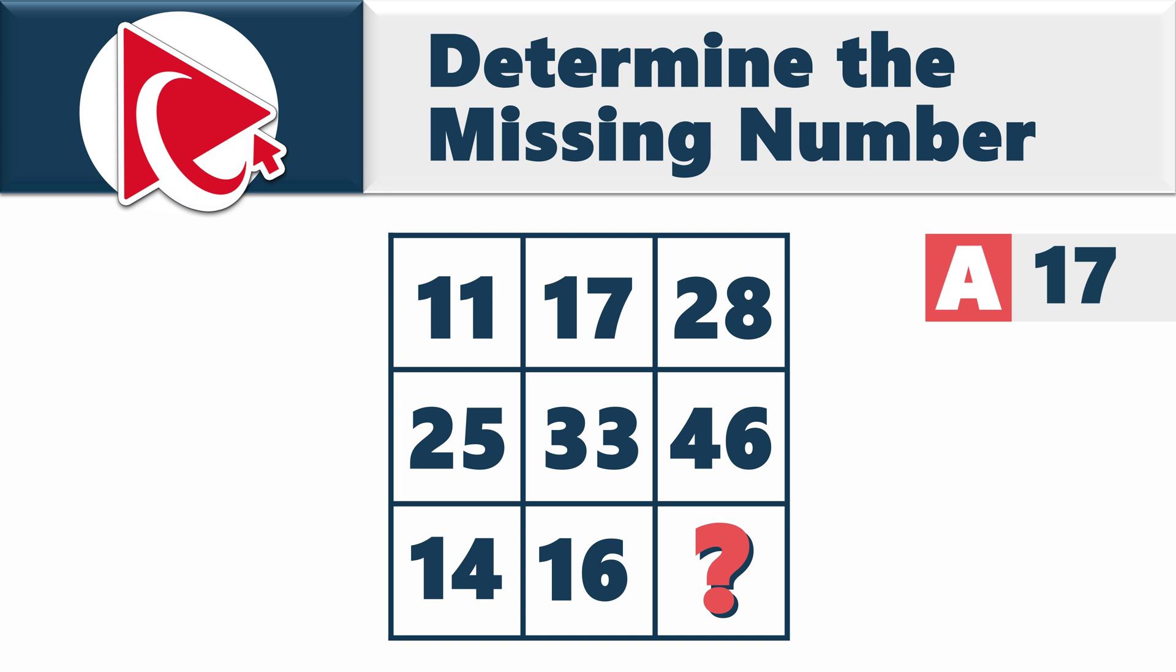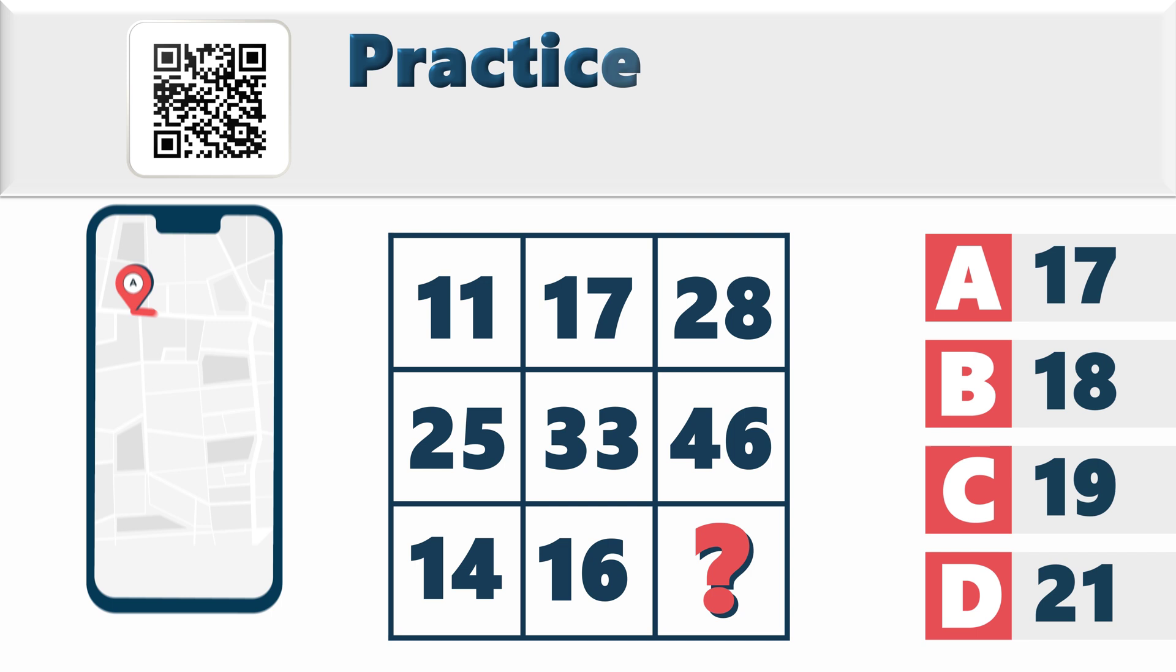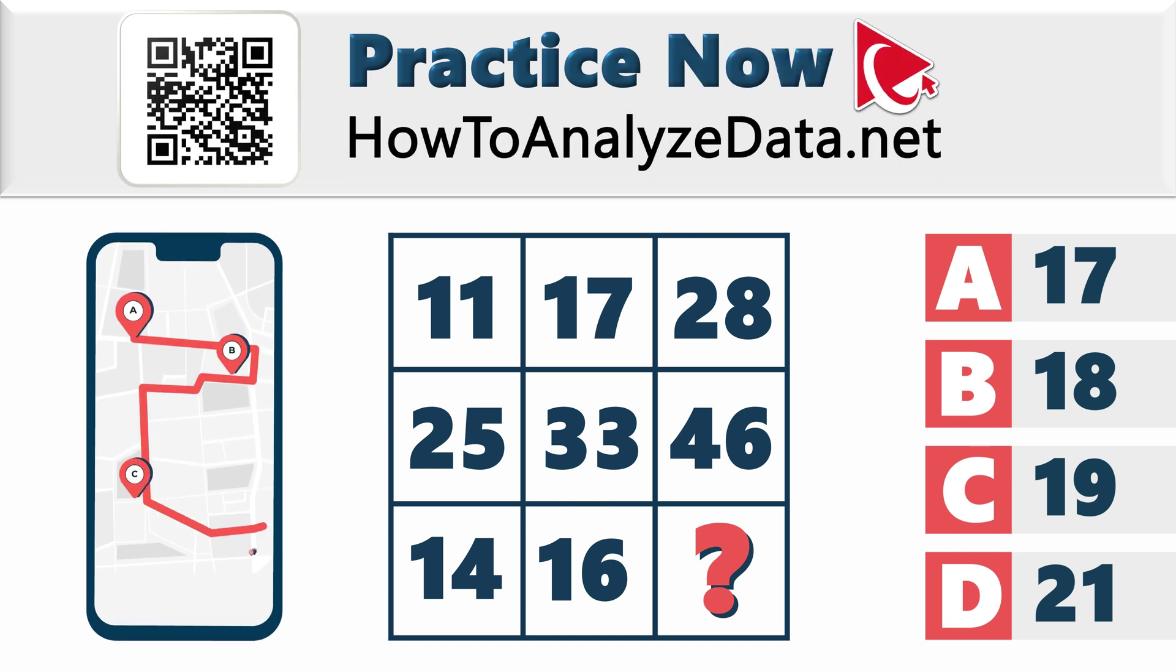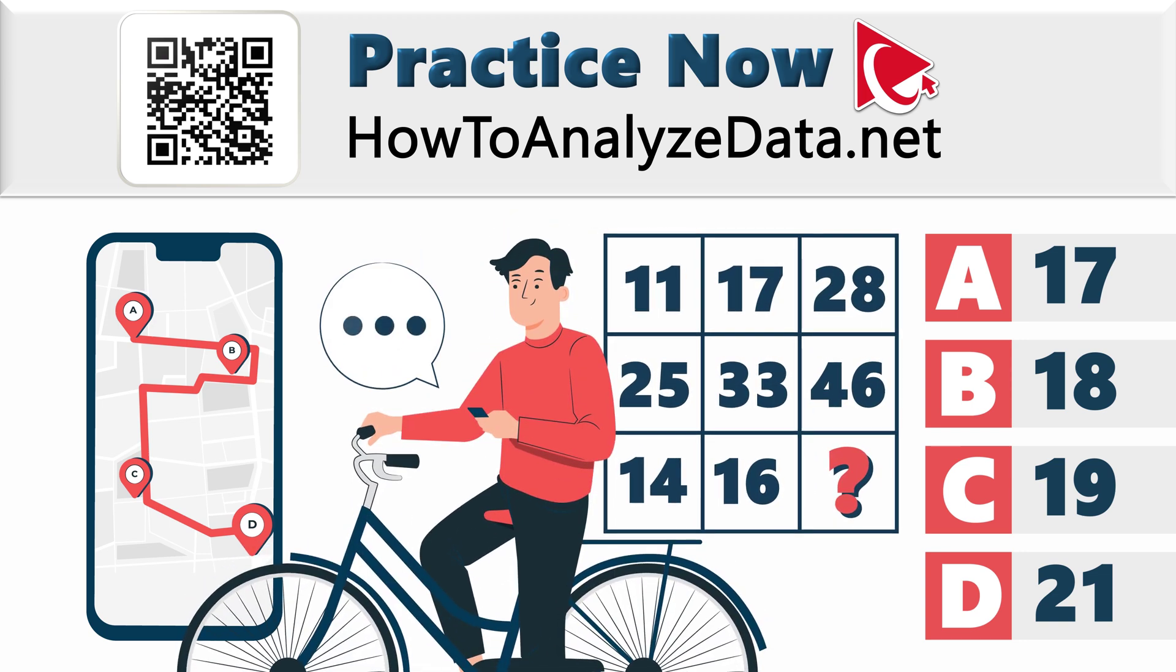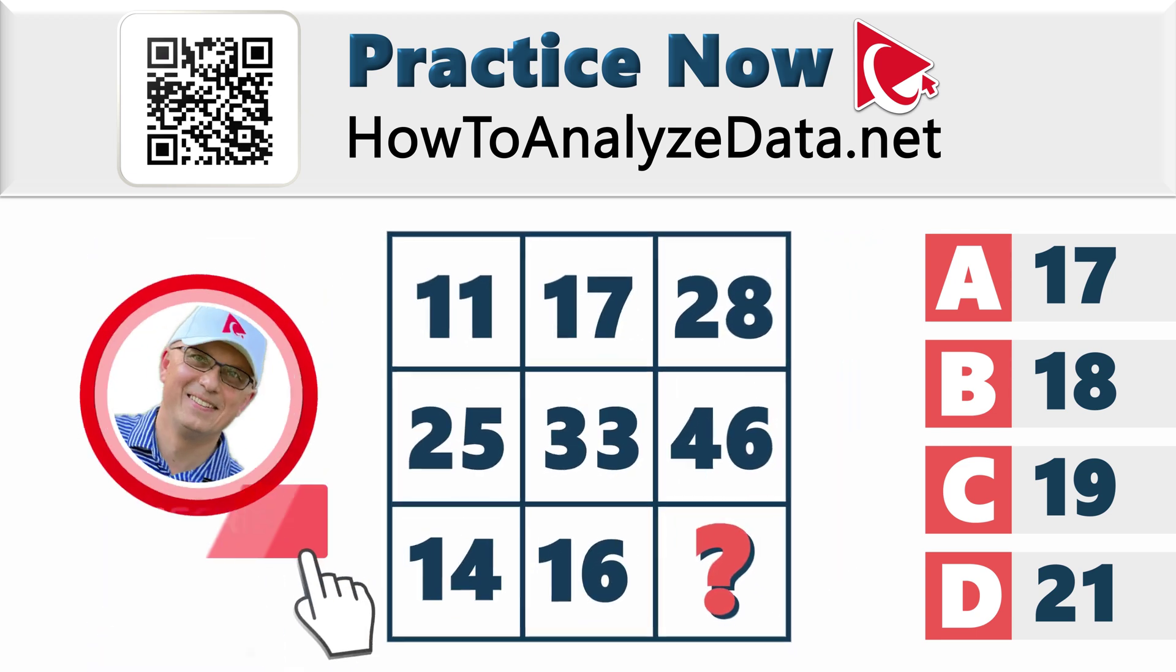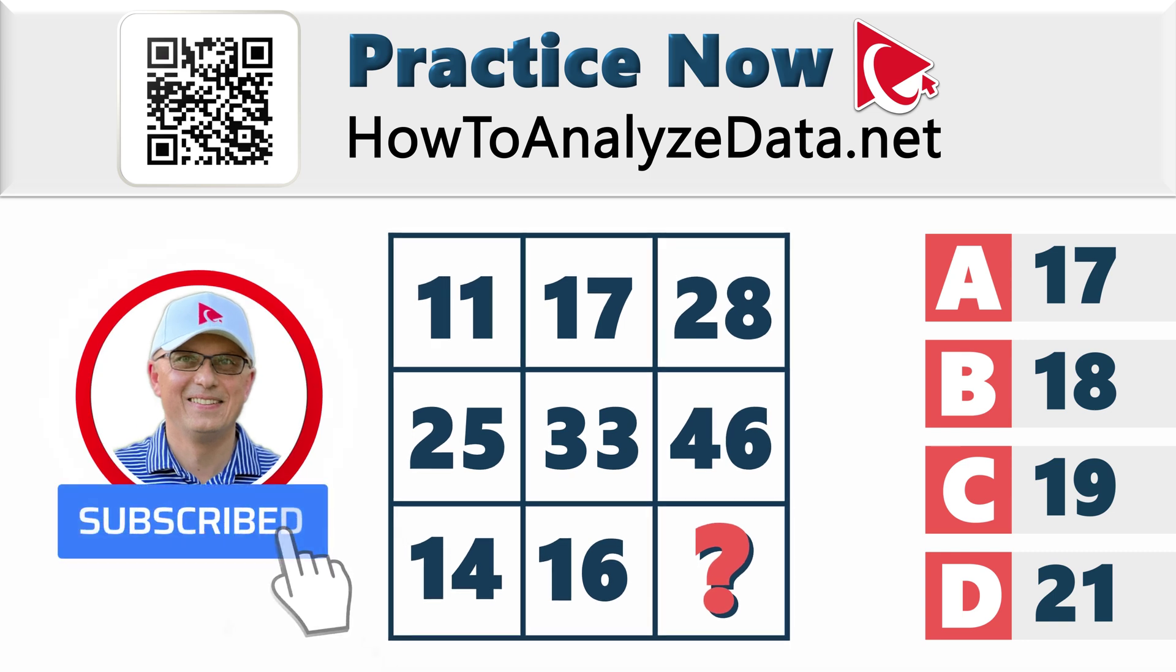You need to determine and calculate it out of 4 possible choices. Choice A, 17. Choice B, 18. Choice C, 19. And last but not least, choice D, 21. I have full confidence that you can do it. Take a scenic route to the answer and make sure your GPS is calibrated. Once you've cracked the code and have the solution, make sure to share your answer in comments for a victorious discussion. I am excited to learn about your solution and offer my feedback. Thanks for participating and good luck solving this intriguing challenge.